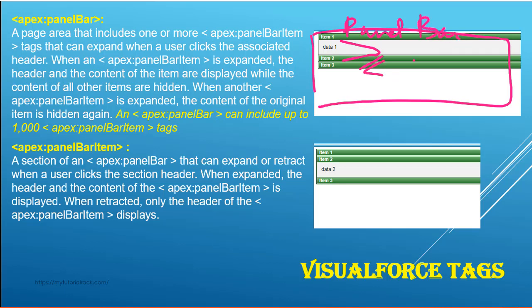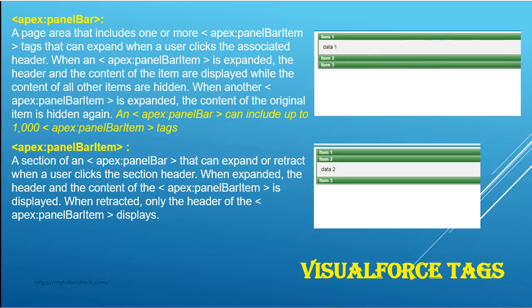The panel bar contains another tag called panel bar item, which is used to add items to the panel bar. According to the definition, it is a page area that includes one or more epics panel bar item tags, which can expand when a user clicks the associated header. When a panel bar item is expanded, the header and content of that item are displayed while the content of the other items are hidden. So only one panel bar item's content is displayed at a time.